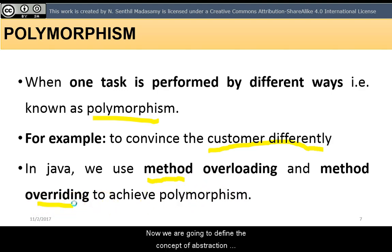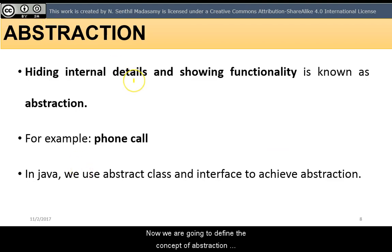Now, we are going to define the concept of abstraction. Hiding internal details and showing the functionality is known as abstraction. For example, phone call. We don't know the internal processing during the phone call. In Java, we use abstract class and interface to achieve abstraction.